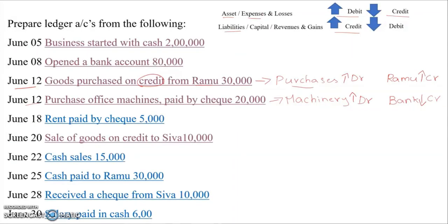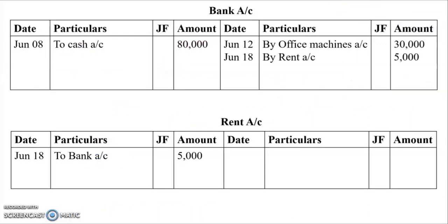The next transaction is June 18 — rent paid by cheque. The two accounts are rent account and bank account. Rent is an expense; when you pay an expense, it increases, so we debit rent. Bank is an asset; when payment is made, bank balance gets reduced, so we credit bank. In bank account (credit side): 'By rent account, ₹5,000.' In rent account (debit side): June 18, 'To bank account, ₹5,000.'